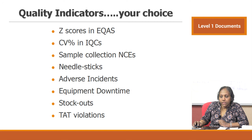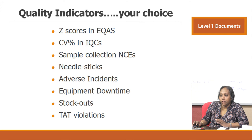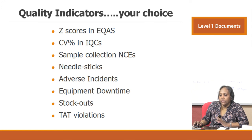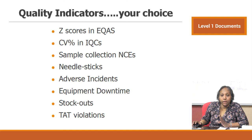If your lab is doing well in analytics — Z-scores and CVs within acceptable ranges — do you still need to set this as an objective? No. But do you stop monitoring? No. These continue as indicators but need not be objectives. Vital parameters such as sample collection NCEs, needle sticks, equipment downtime, adverse incidents, stock outs, and stat violations should stay as indicators regardless. Quality indicator setting is entirely your choice.